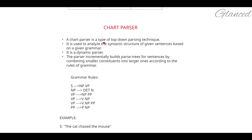In my previous video I discussed what is top-down parsing. In top-down parsing you parse a particular tree from top to bottom, represented by using the down arrow. It is used to analyze the syntactic structure of given sentences based on a given grammar. The use of a parser is to analyze the syntactic structure of the given sentence by using the grammar rules. So it is a dynamic parser.